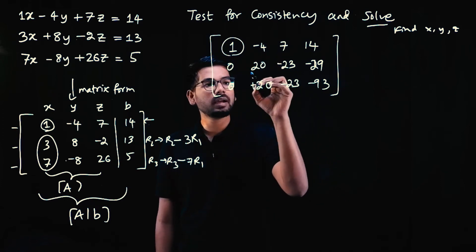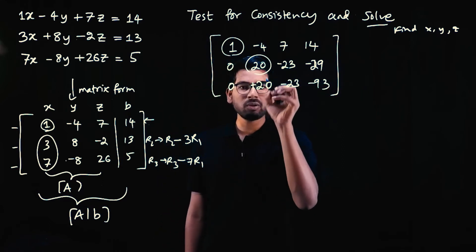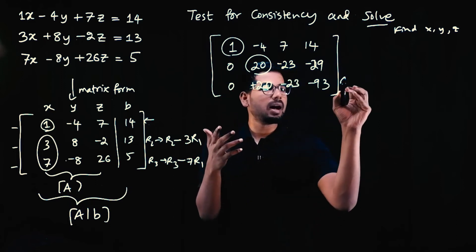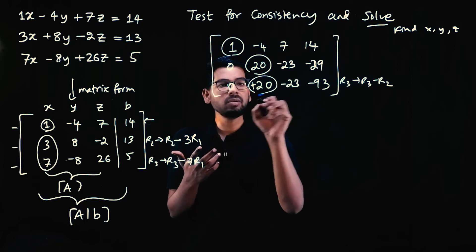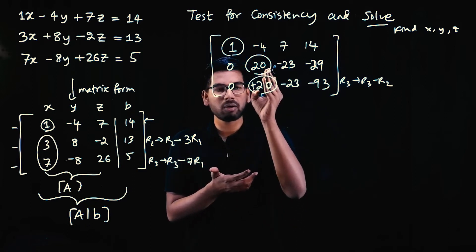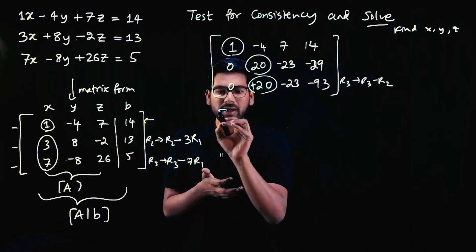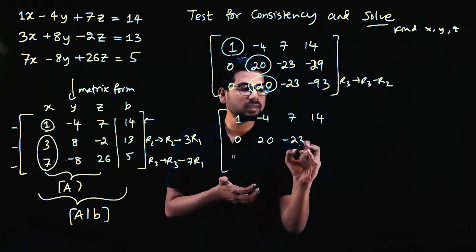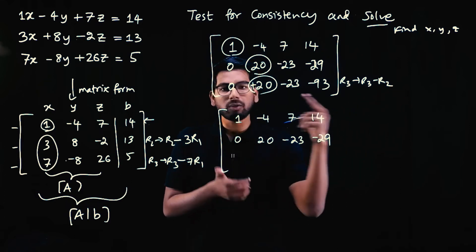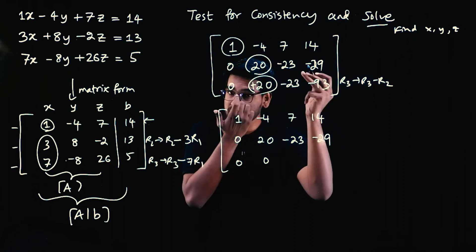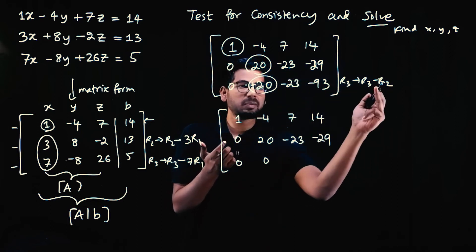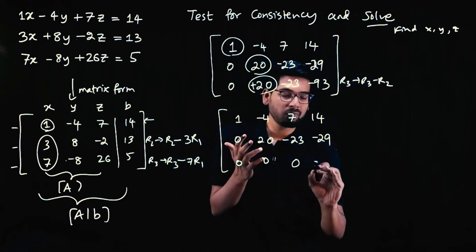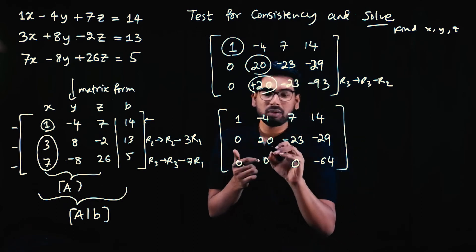After the first set of row operations, we have zeroed out the first elements of rows 2 and 3. Now looking at the second elements — both row 2 and row 3 have 20. So we perform R3 minus R2: 20 minus 20 = 0; minus 23 minus (minus 23) = 0; RHS: minus 93 minus (minus 29) = minus 93 plus 29 = minus 64.